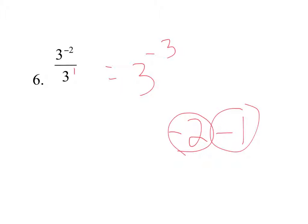We never leave anything as a negative exponent. So I just do flip and change the sign. So our final answer is 1 over 3 to the 3rd.